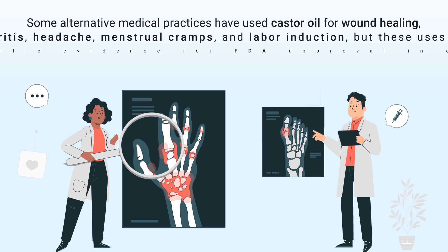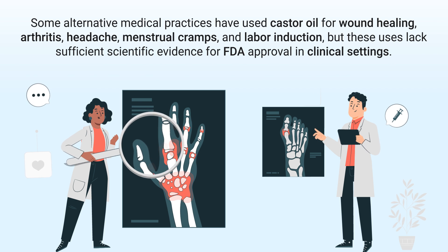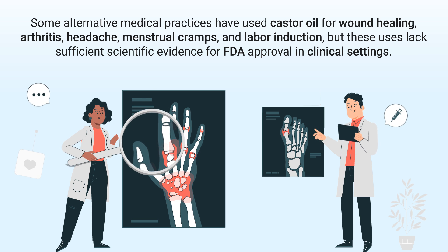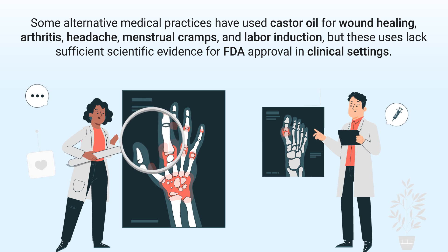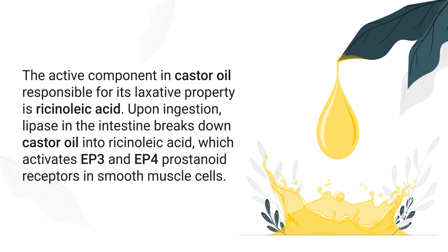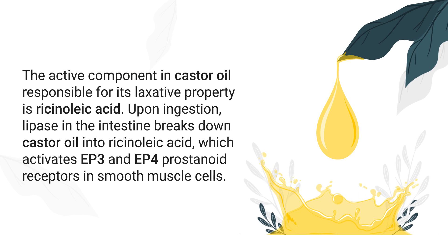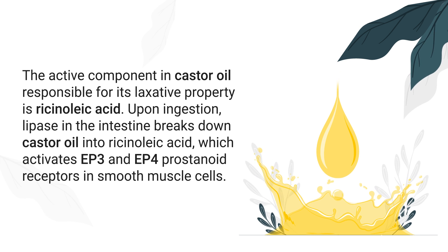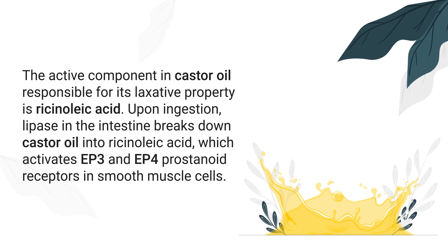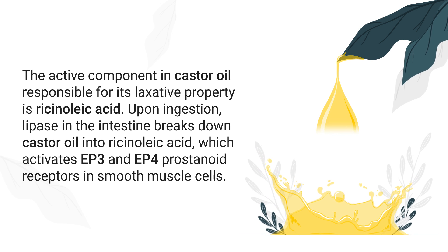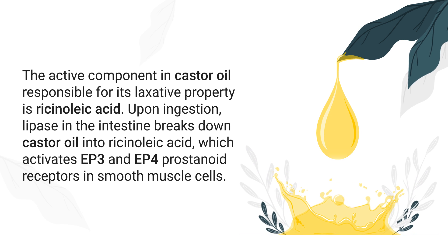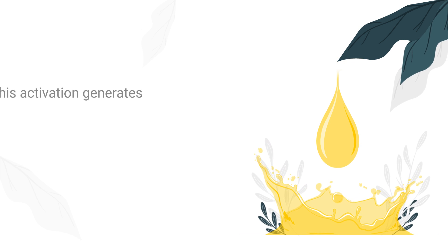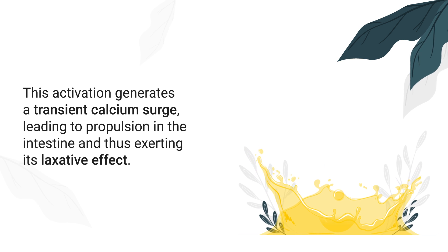Some alternative medical practices have used castor oil for wound healing, arthritis, headache, menstrual cramps, and labor induction, but these uses lack sufficient scientific evidence for FDA approval. The active component responsible for its laxative properties is ricinoleic acid. Upon ingestion, lipase in the intestine breaks down castor oil into ricinoleic acid, which activates EP3 and EP4 prostanoid receptors in smooth muscle cells.